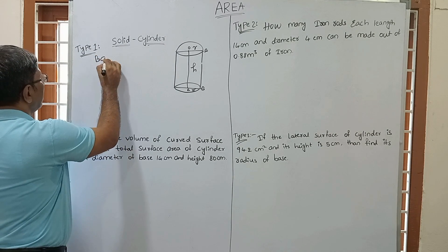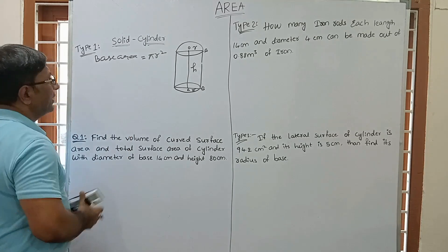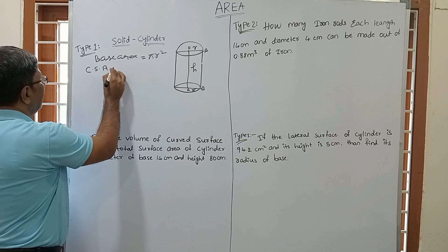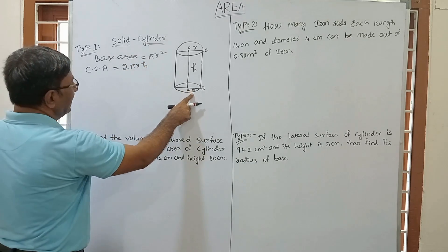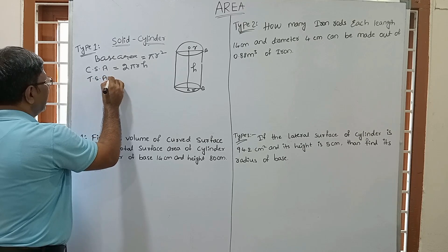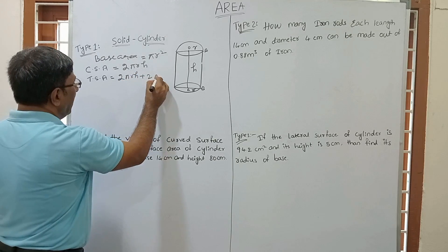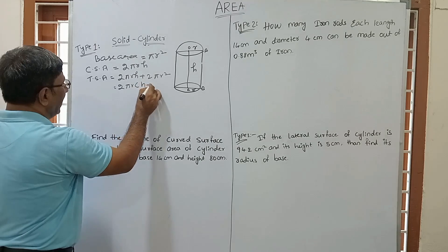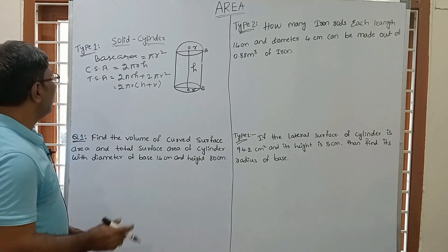First formula: base area of cylinder is π R². Second formula: curved surface area of the solid cylinder, where R is the radius and H is the height. Third formula: total surface area of the cylinder is 2πR² + 2πRH, which simplifies to 2πR(H + R). With these three basic formulas we will solve all questions.